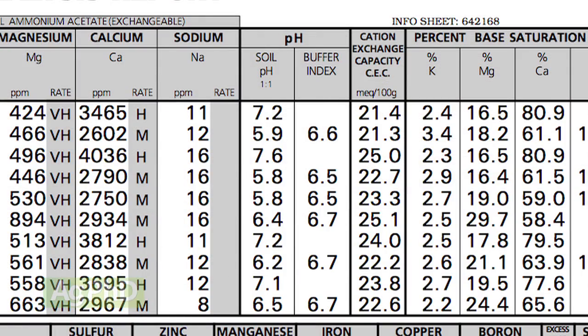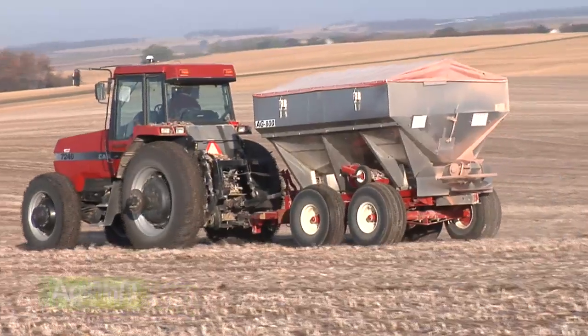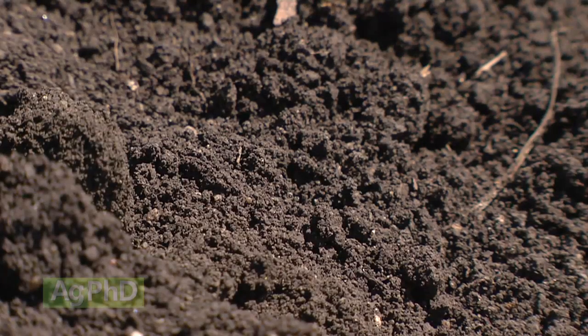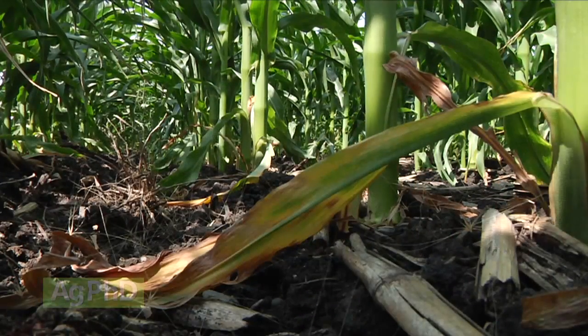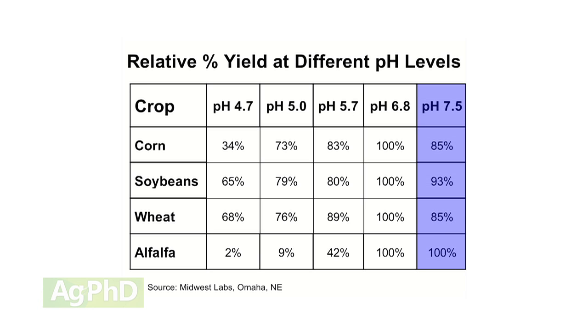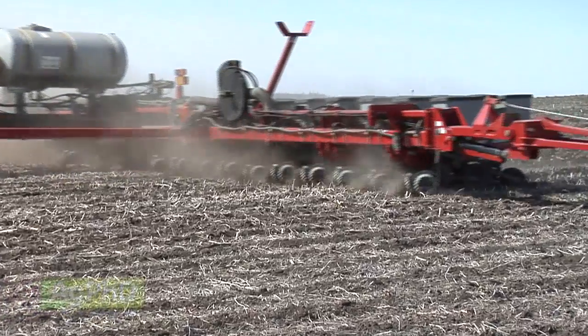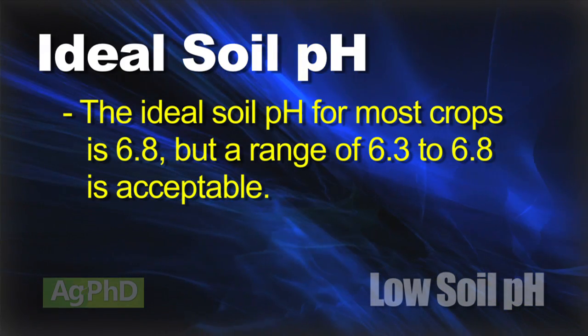One of the first things we'll look at on soil tests is soil pH — it is so important. One reason that's going to hit home this year is fertilizer availability. When we get our pH way out of whack, whether really high or really low, fertilizer isn't available at those pH levels. A low pH means acidic, and in acidic soil, nutrients like N, P, and K aren't going to be as available as they would be at a neutral pH. We'll pull up a chart here — from Midwest Labs, based on their years of research — showing how yield potential drops as soil pH drops. Ideally we'd like to see a 6.8 pH, but even 6.3 is good enough, so we want to get at least to that 6.3 level.